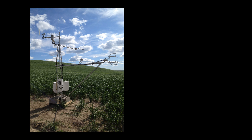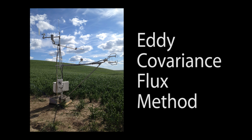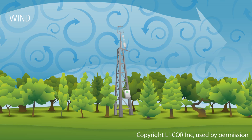The most direct and accurate way to measure carbon uptake and nitrogen loss between the atmosphere and agricultural land at the field level is using the eddy covariance flux method. This diagram illustrates how updrafts and downdrafts at the surface of the Earth are the result of turbulent eddies in the air. Using eddy covariance flux towers to measure the changing speeds of updrafts and downdrafts, scientists can calculate the net release and uptake of gases such as CO2.